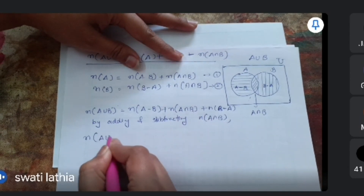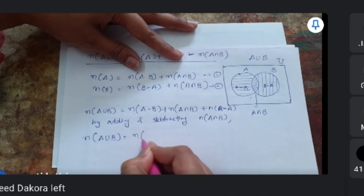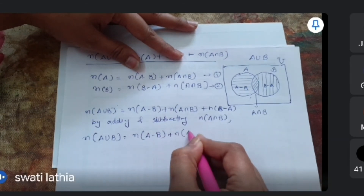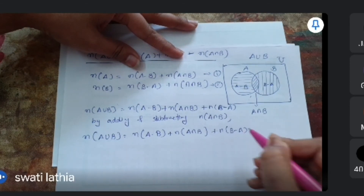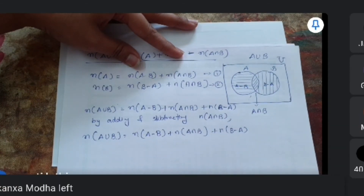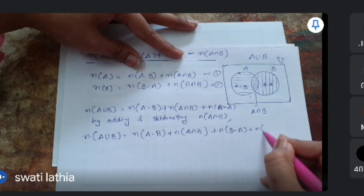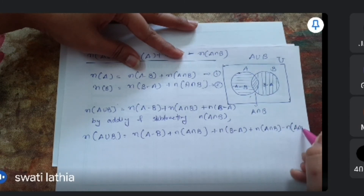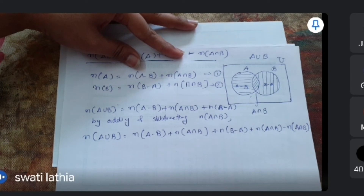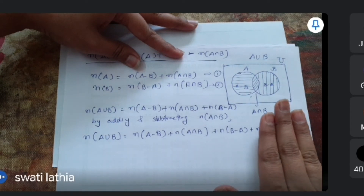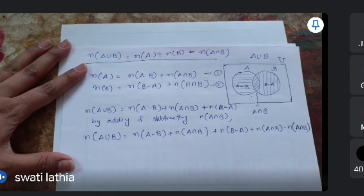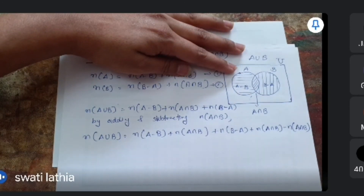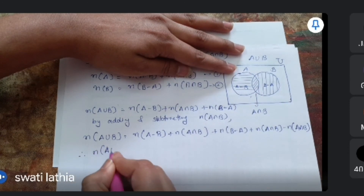હું લખ્યું છે: n(A∪B) = n(A-B) + n(A∩B). જેટલી વસ્તુ હતી એ જ રાખી છે, કોઈ change કર્યું નથી. A∩B remove કરું — add કર્યું, remove કરવું જરૂરી છે. જો plus ન હોય, તો બે cut થઈ જાય, 0 થઈ જાય — automatically equation માં કઈ change ન થાય.